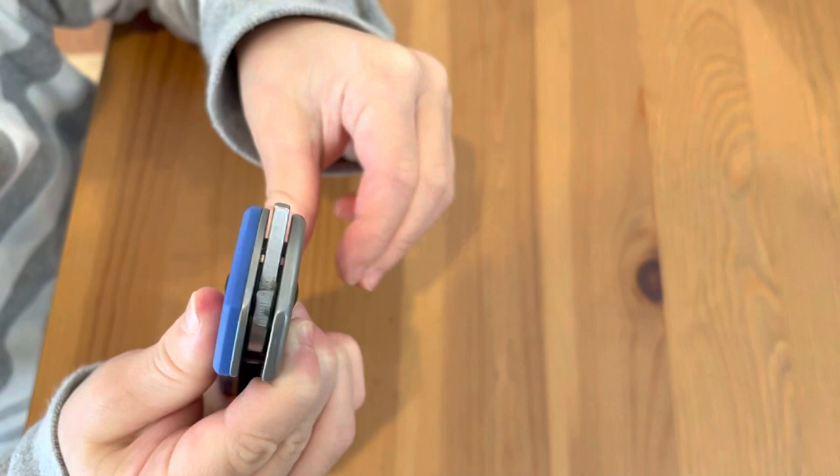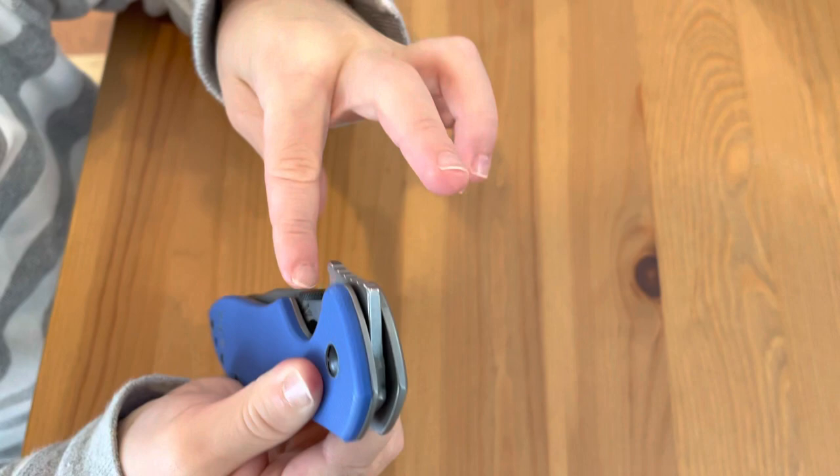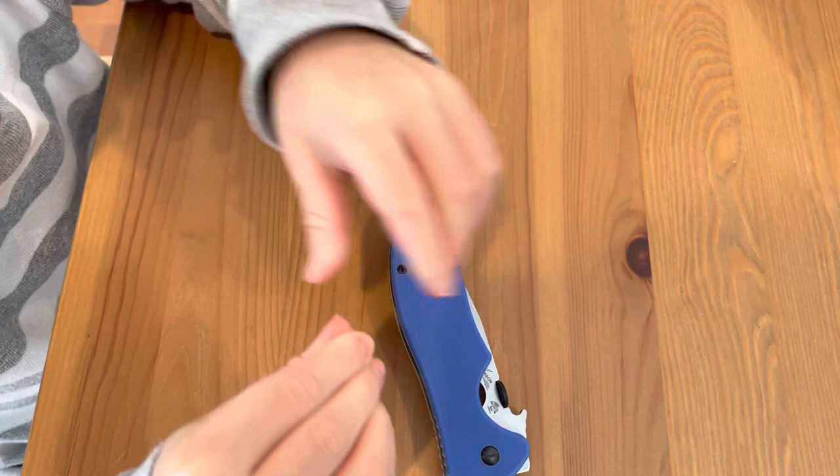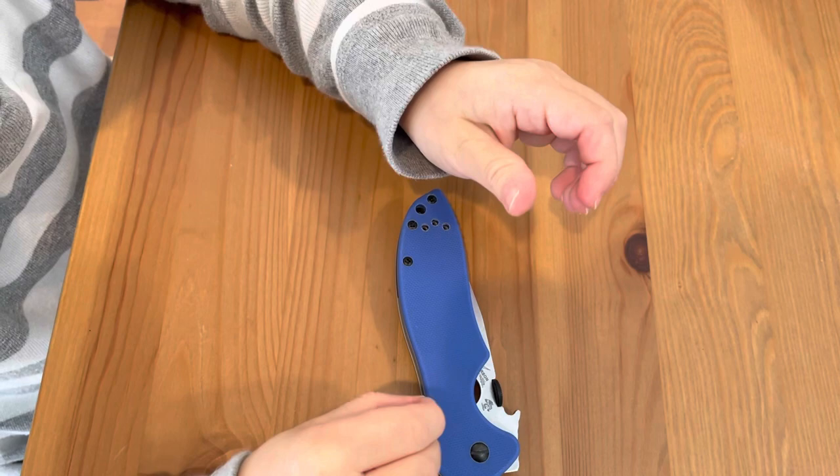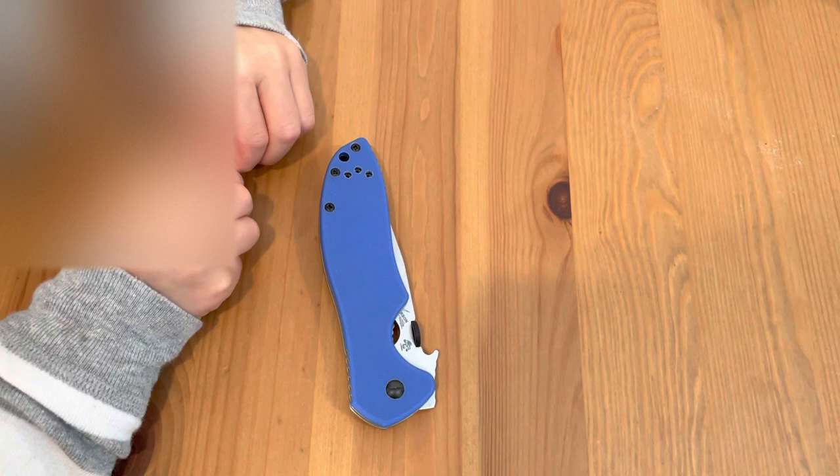And you only touch that spine of the blade, right? Because the other part's sharp. Yeah, you only touch the spine like that. Now, show us how to open it safely. Can you show us how to open it? My thumb was hurting. Oh, your thumb's a little hurting from opening it? Yeah. Yeah, this knife is a little bit big for a little three-year-old like him, but it is pretty usable.